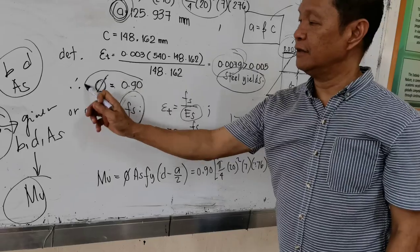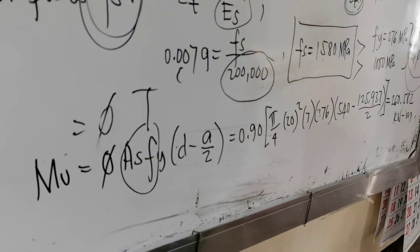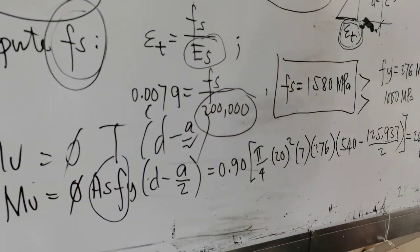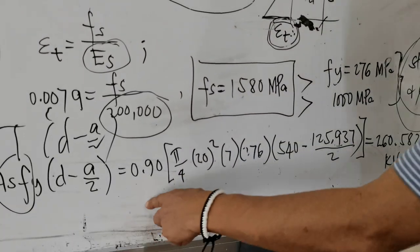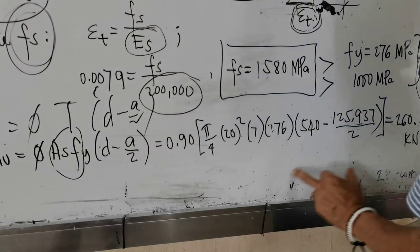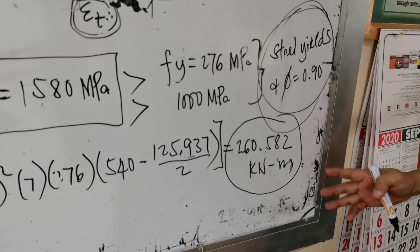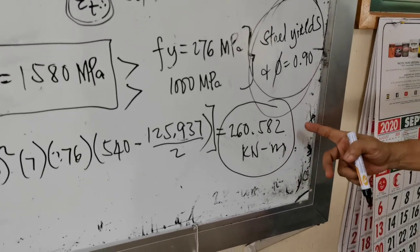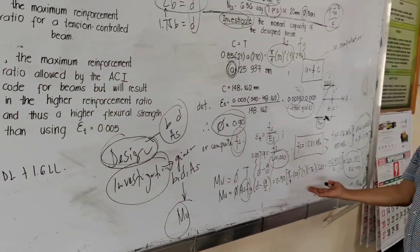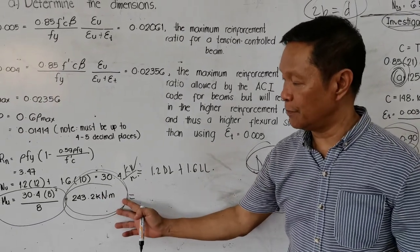Now knowing the value of phi = 0.9, we can compute the ultimate moment: Mu = φ × A_s × FY × (d − A/2). Substituting values — φ = 0.9, area of 7 pieces of 20 mm diameter bars, FY, and the moment arm d minus A over 2 — you get Mu = 260.582 kN·m. The capacity of this designed beam is 260.582 kN·m, whereas the design moment is only 243.2 kN·m, so the beam is capable of resisting the required moment.